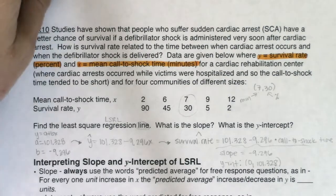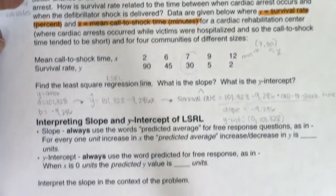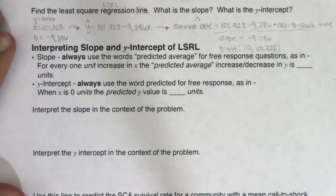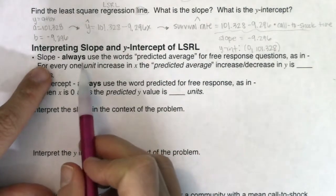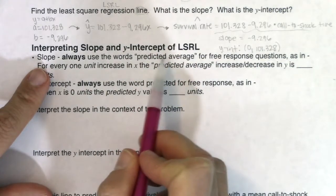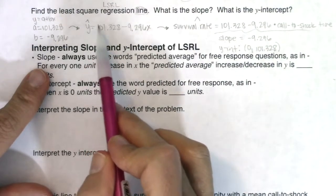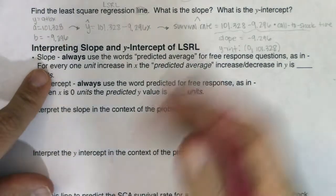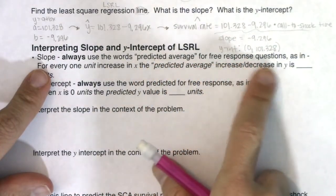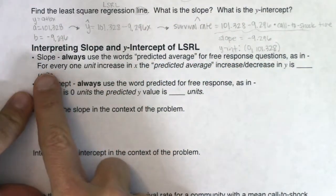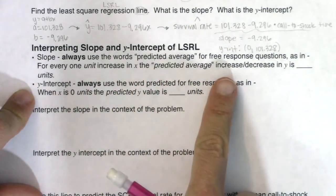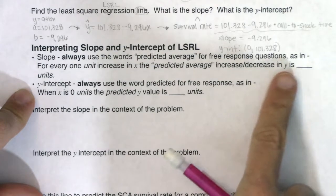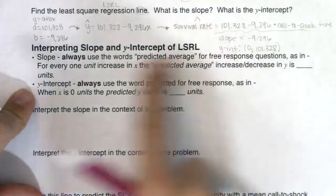When interpreting slope, always use the words 'predicted' and 'average.' It's a predicting equation, and slope is an average rate of change from your math classes. The template is: 'For every one unit increase in x, the predicted average increase/decrease in y is [blank] units.' Choose increase or decrease depending on whether the slope is negative. For y-intercept, the template is: 'When x is zero units, the predicted y value is [blank] units.'